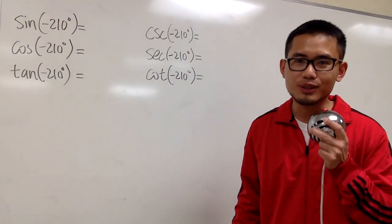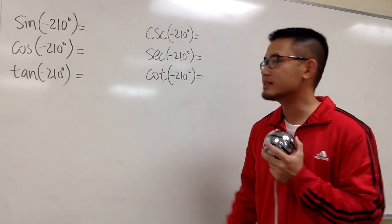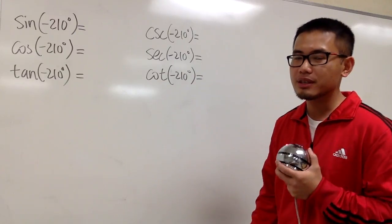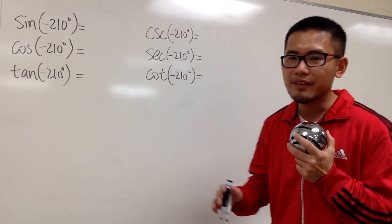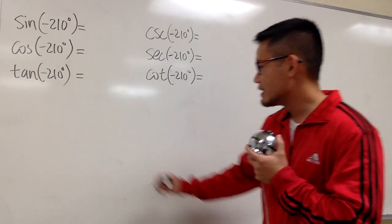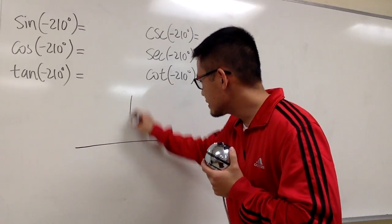We're going to figure out the exact values for the trig functions when the angle is negative 210 degrees. So be sure we draw a picture and then use a special red triangle. So now let's go ahead and do the work.